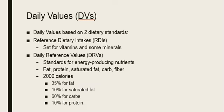Daily values are based on two dietary standards. The first is Reference Dietary Intakes (RDIs), which are set for vitamins and most minerals. RDI values for people over age four are set at the highest RDA value for any life stage group. If the nutrient does not have an RDA, the Adequate Intake level is used. These are used to calculate percent daily value on Nutrition Facts Labels. The second standard is Daily Reference Values, which are standards for energy-producing nutrients including fat, protein, saturated fat, carbohydrates, and fiber — also used to calculate percent daily value.